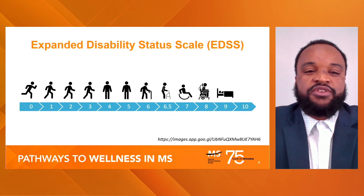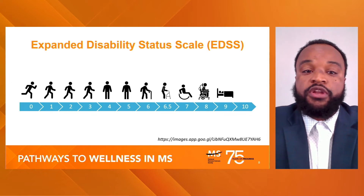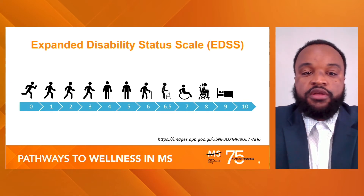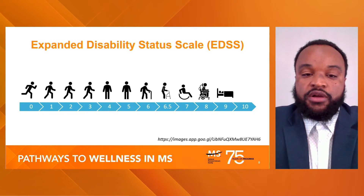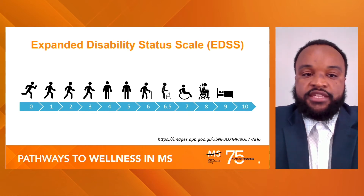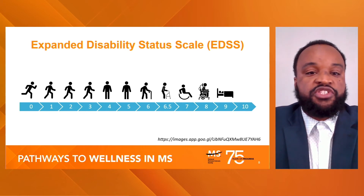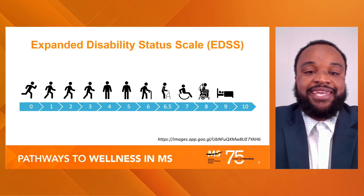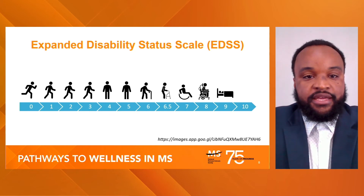It is based on a standard neurological examination, observations of walking, and information you report about your walking ability — like the distance you can walk and the amount of assistance you need for walking. The EDSS is an ordinal clinical rating scale ranging from zero, which is a normal neurological examination, to 10, which would be death.